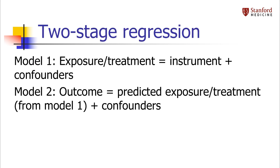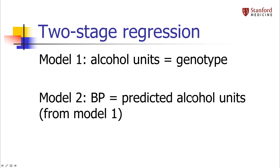I haven't told you how to calculate the standard errors for the estimates, because in practice we don't calculate these by hand — we use what's called a two-stage regression. We first fit a model to predict each person's exposure level based on their value for the instrument. Then we take these predicted exposures and use them in a model to predict the outcome, instead of using the actual exposures. Going back to the PLOS One example, you would first run a model predicting the effect of genotype on alcohol exposure, and that would give you a predicted exposure to plug in to predict blood pressure.